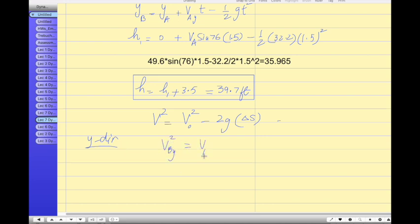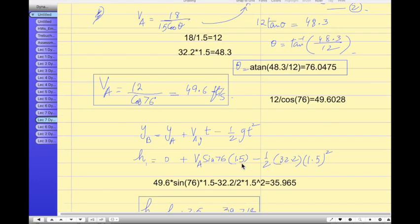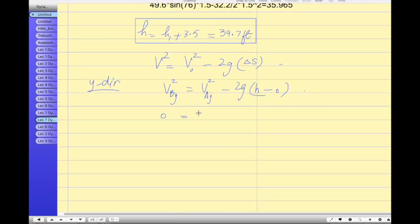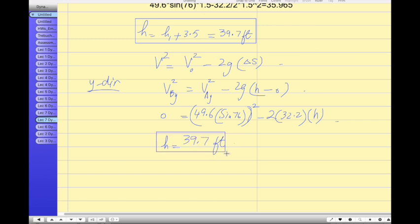So VB,Y square, VA,Y square, 2G, H minus 0, the maximum height. So let's do it this way. So what is VB? This is 0 because the Y velocity at maximum height becomes 0. I mentioned earlier. So 76 sine, this is 49.6. So I will write down 49.6 times 76 whole square, minus 2, 32.2 times H. So if you find H from here, you should get 39.7. I will leave it to you for homework, or you can do it now.